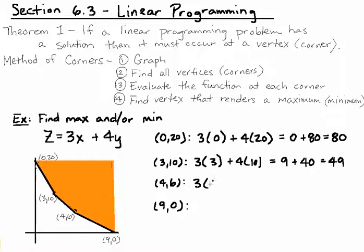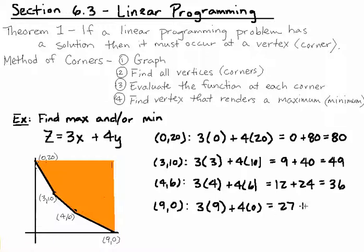For the corner (4,6): 3(4) + 4(6) = 12 + 24 = 36. And finally, at (9,0): 3(9) + 4(0) = 27 + 0 = 27.